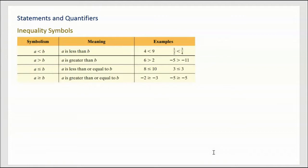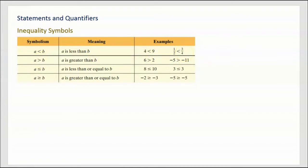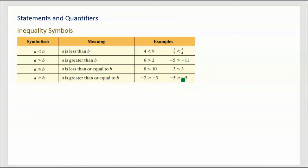Let's look at mathematical statements we can negate. As a reminder: 'A < B' is read 'A is less than B' — for example, 4 < 9 or 1/2 < 3/4. 'A > B' is read 'A is greater than B' — for example, 6 > 2 or -5 > -11. 'A ≤ B' means 'A is less than or equal to B' — for example, A ≤ 10 or 3 ≤ 3. 'A ≥ B' means 'A is greater than or equal to B' — for example, -2 ≥ -3 or -5 ≥ -5.